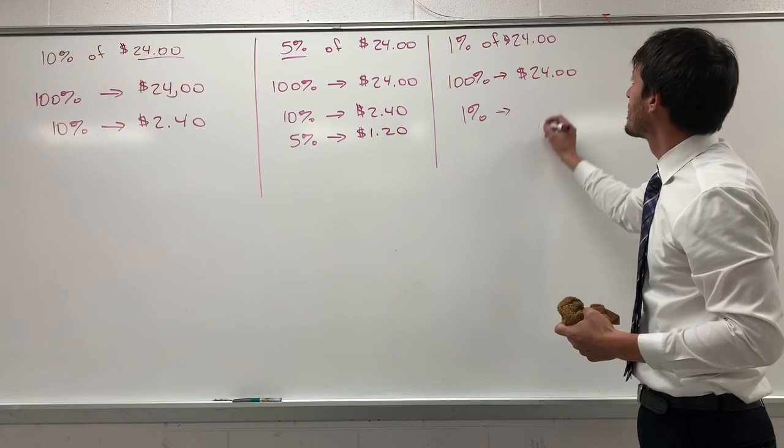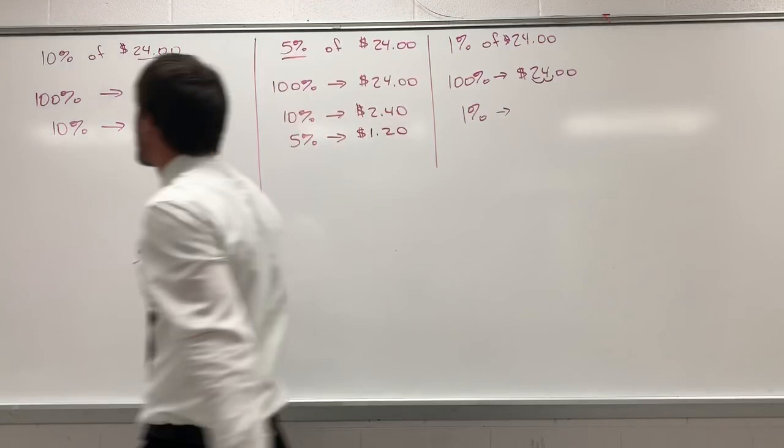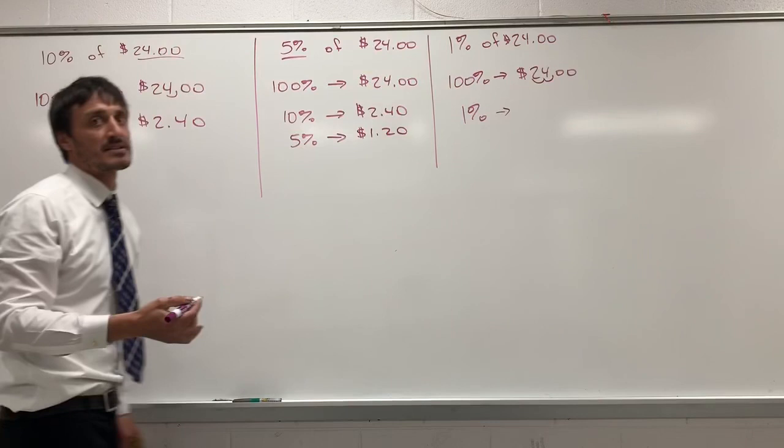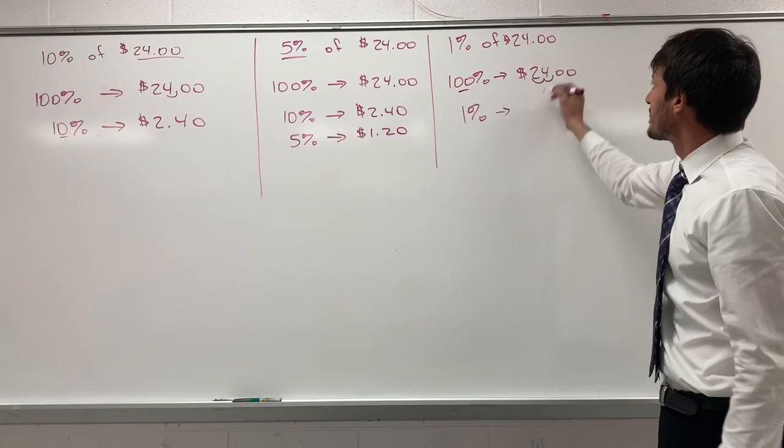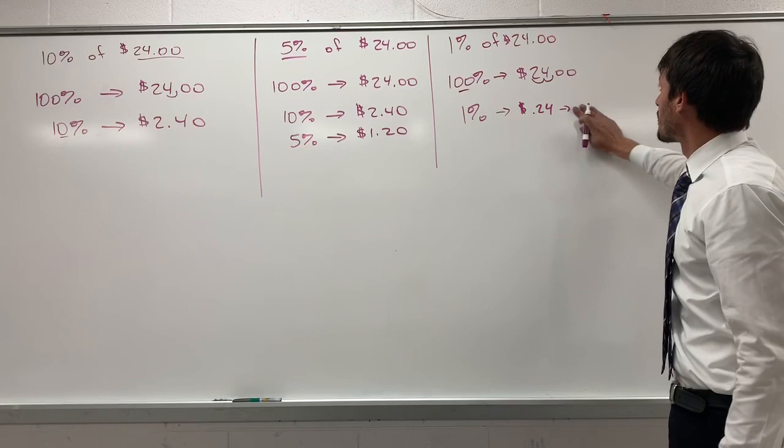Why? Well, when we divide it by 10 parts, 10 has one zero, so we move the decimal once. When we divide it into 100 parts, 100 has two zeros, so we move the decimal twice, which gives us $0.24.